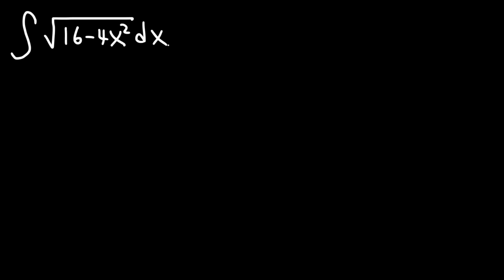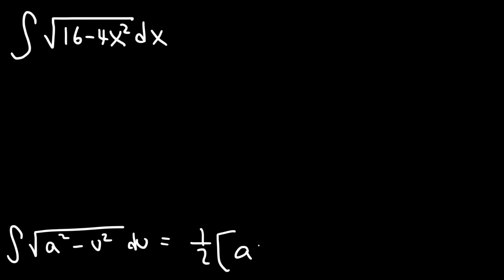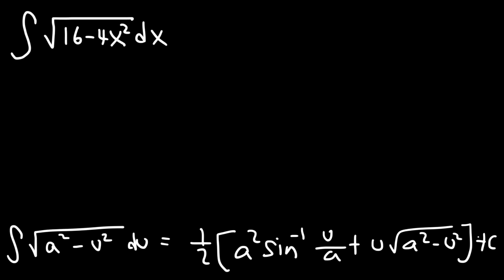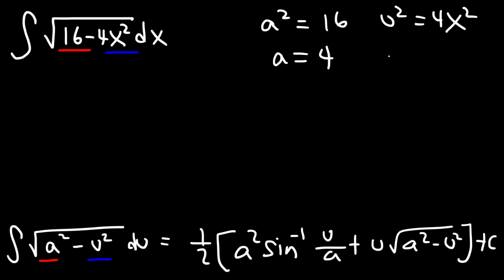Let's try another problem: find the indefinite integral of the square root of 16 minus 4x squared dx. Using the same formula — the integral of the square root of a squared minus u squared du — we can see that a squared is 16 and u squared is 4x squared. So a equals 4, u equals 2x, du equals 2dx, and dx equals du over 2.